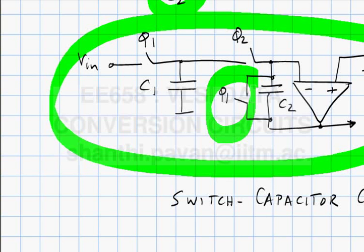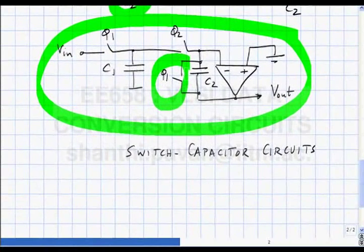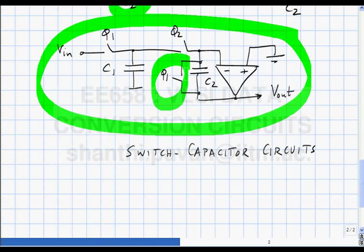You now have what is called a discrete-time accumulator. The voltage in each cycle does not just correspond to the input in that cycle, but also remembers all past inputs. It keeps accumulating charge — this is an accumulator.